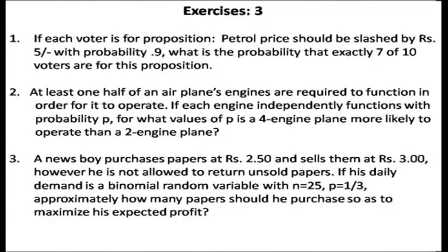We will go through exercises on discrete random variables, and I will try to give you small hints so that you can work them out yourself. Question one says each voter is for a proposition that petrol price should be slashed by 5 rupees, and people are supposed to vote for this with probability 0.9. What is the probability that exactly 7 of 10 voters are for this proposition? You should be able to guess what distribution to use here.